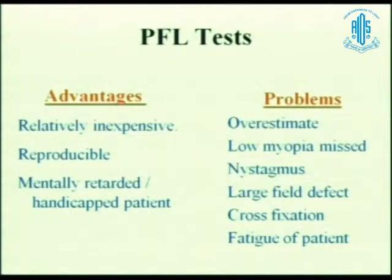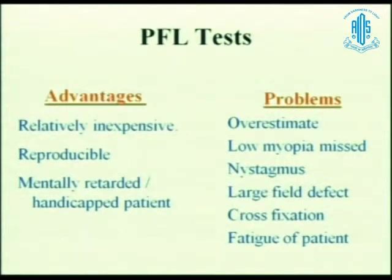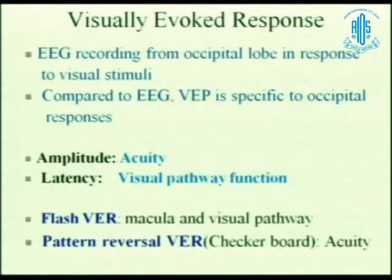The advantages of forced preferential looking are that it is relatively inexpensive, reproducible, and can be done even for uncooperative or mentally challenged kids. The problems are that it overestimates vision, low myopia may be missed because it is tested at near, nystagmus is a problem, large field effects are a problem, and cross fixation is difficult. You have to close one eye and try. Patient fatigue is another issue because you have to use a lot of cards, and the child may appear not to be looking even though visual acuity may be good.